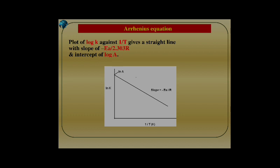Arrhenius equation can be diagrammed or plotted by plotting log K against 1 over T, or reciprocal of T, with the slope equals minus Ea divided by 2.303 R, and the intercept will be log A.